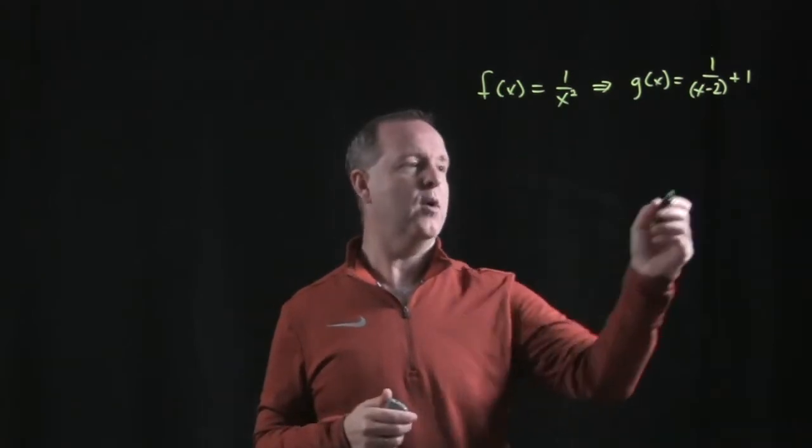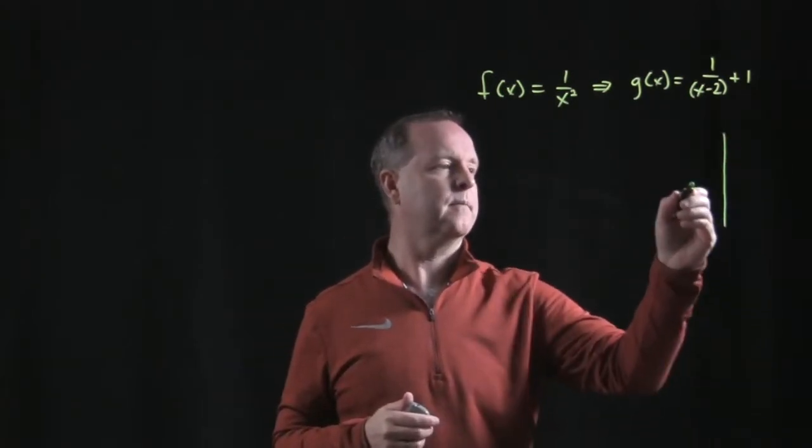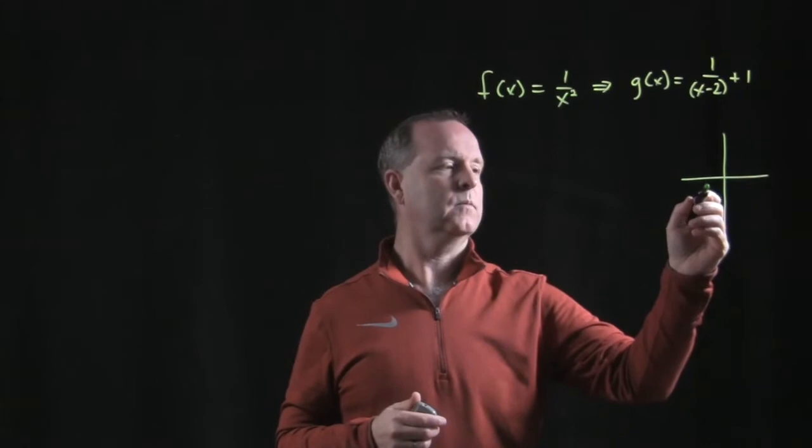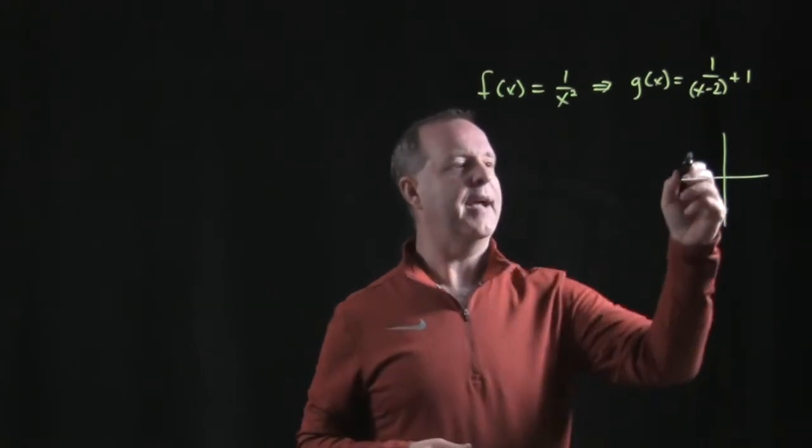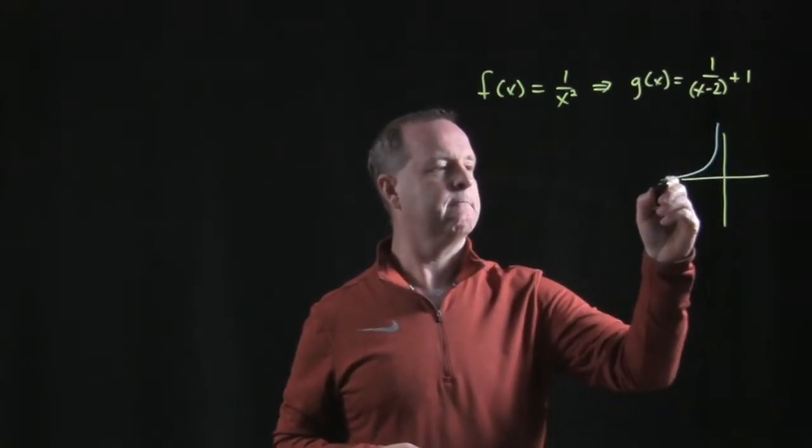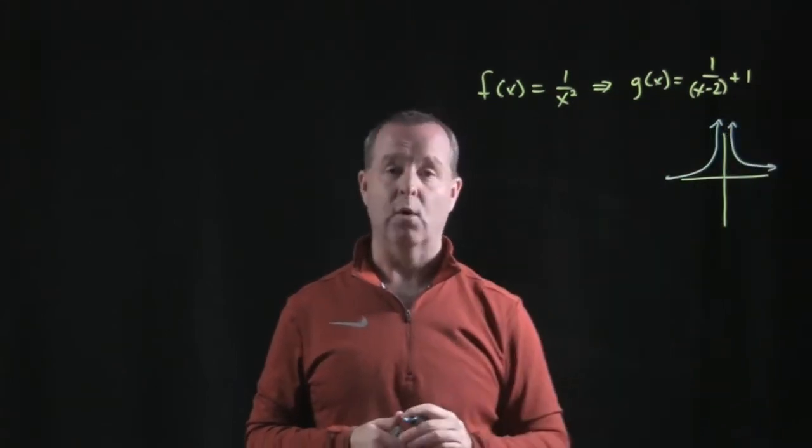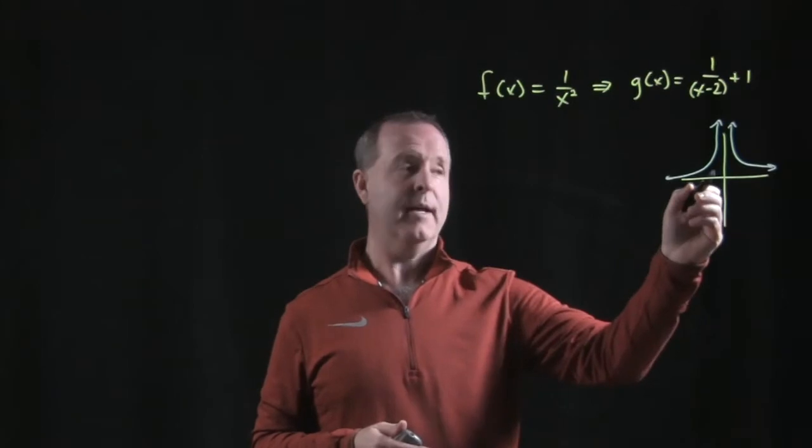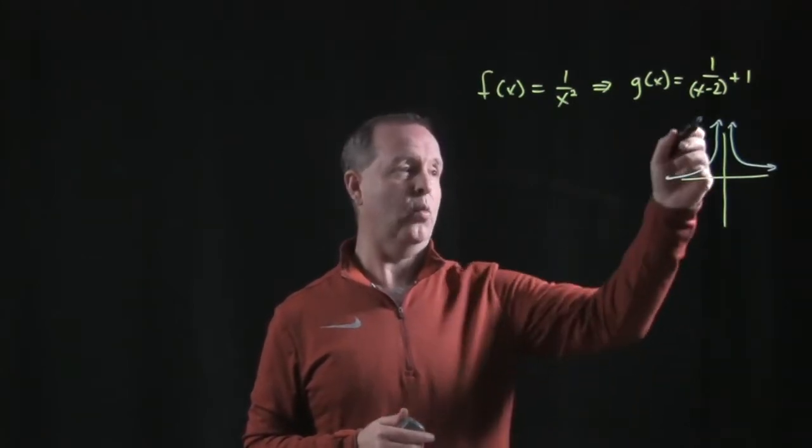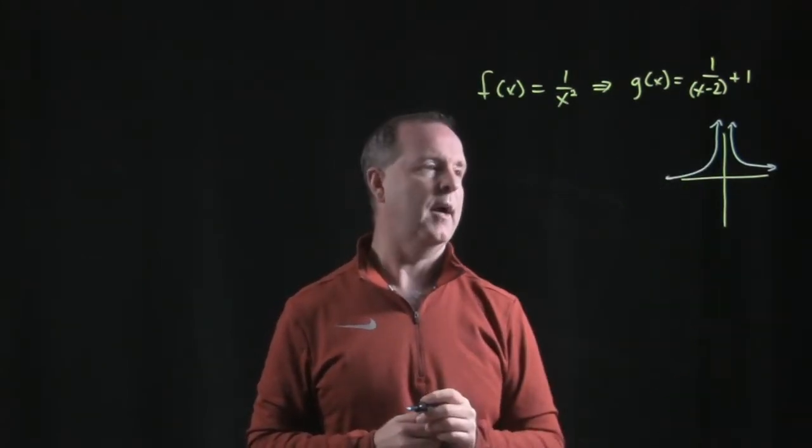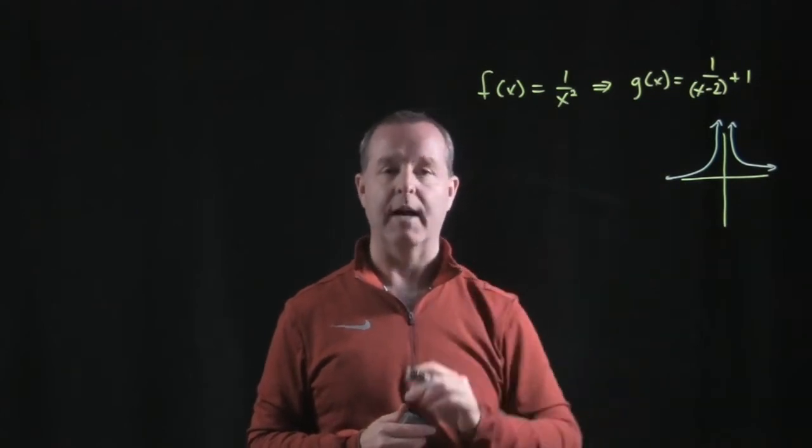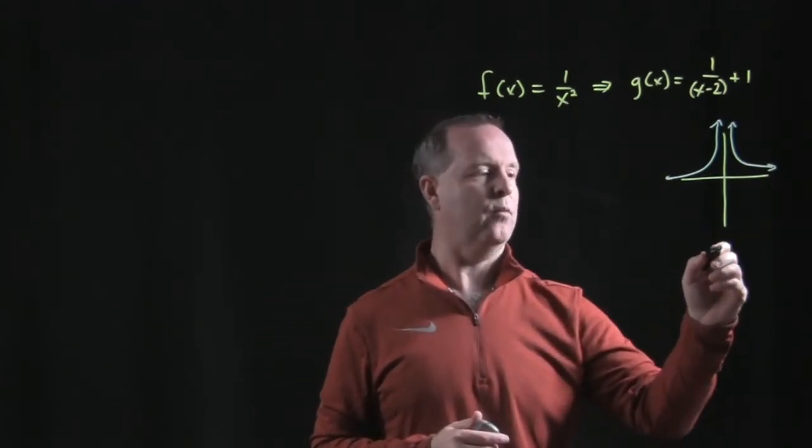So let's start with 1 over x squared. And that graph has a horizontal asymptote at 0, has a vertical asymptote at 0, both of them are at 0. And this is the graph 1 over x squared.